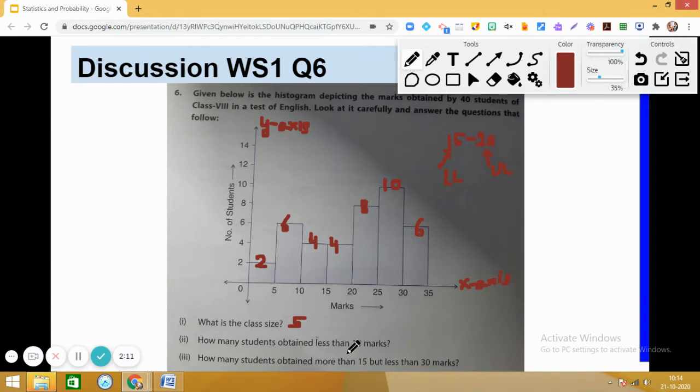Let us move on to the second question. How many students obtained less than 10 marks? Very simple question. You count the number of students from 0 to 5, which is 2, plus 5 to 10, which is 6. So 2 plus 6 gives us 8.